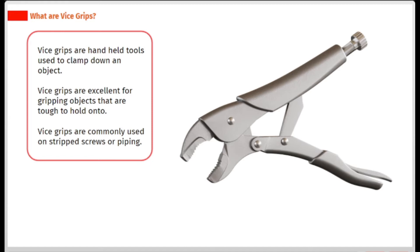Vice grips are handheld tools used to clamp down an object. Vice grips are excellent for gripping objects that are tough to hold onto. Vice grips are commonly used on stripped screws or piping.